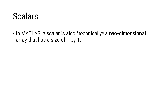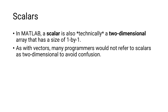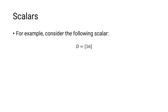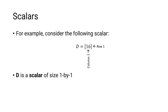Now let's take a look at how MATLAB defines scalars. In MATLAB, a scalar is also technically a two-dimensional array that has a size of 1 by 1. As with vectors, many programmers would not refer to scalars as two-dimensional to avoid confusion. For example, consider the following scalar D. D has one row and one column, and D is a scalar variable of size 1 by 1.